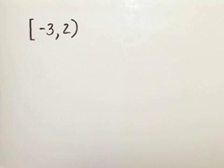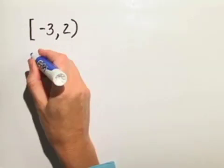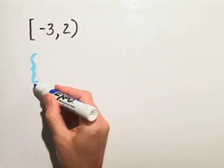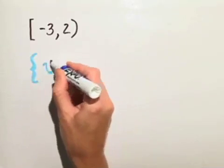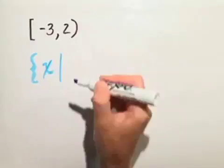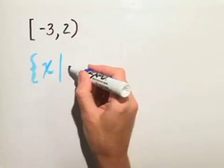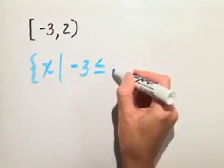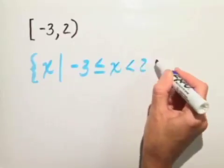So, in order to write this in set builder notation, we write a brace, which means we're starting the set of all x such that negative 3 is less than or equal to x, which is less than 2.